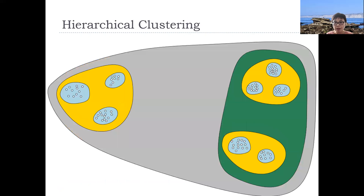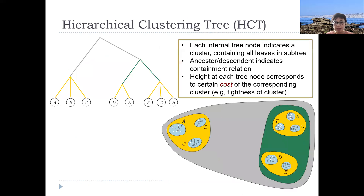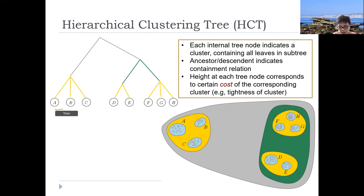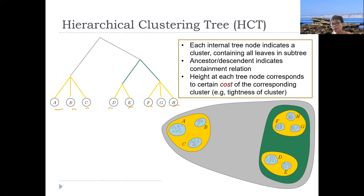I can summarize what we have earlier into a so-called hierarchical clustering tree. Let's say that ABC are the lowest eight clusters. At the lowest level, these are the clusters we have — we have eight clusters.